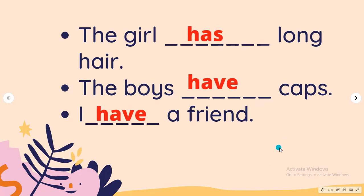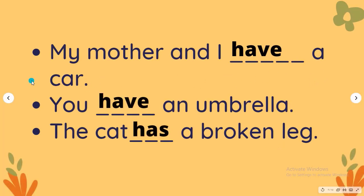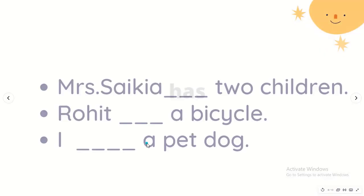Here are some more examples: My mother and I have a car — 'my mother and I' uses have. You have an umbrella — that means the umbrella belongs to you, possession belongs to you. Have is working as a main verb here. The cat has a broken — the cat is referred to as 'it', so we use has with it.